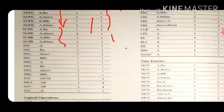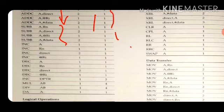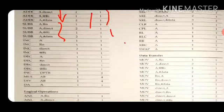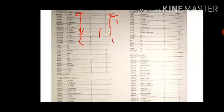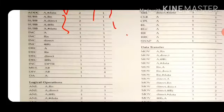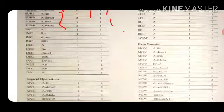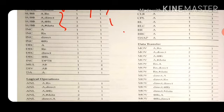The INC instruction consumes one machine cycle. Similarly, DEC also consumes one machine cycle. Except INC DPTR — since DPTR is a 16-bit register, this instruction consumes two machine cycles.